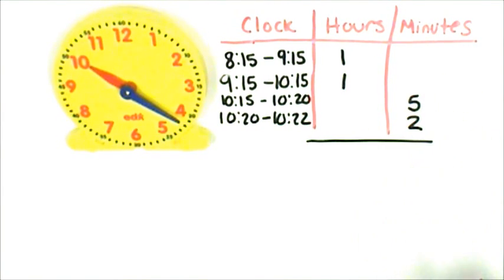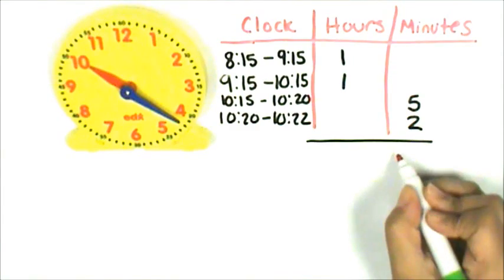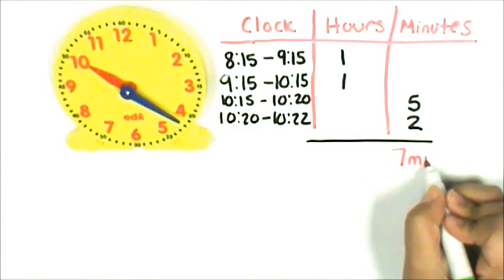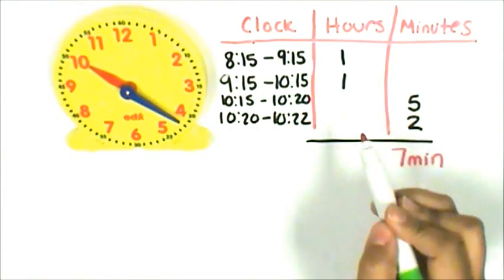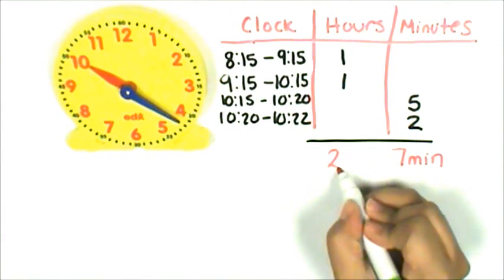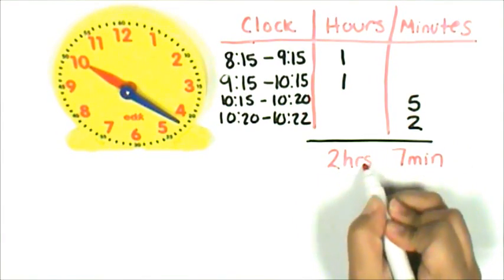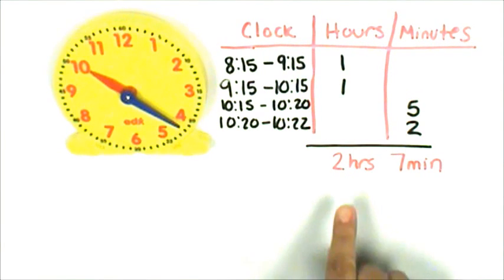I look at my minutes. Five minutes and two minutes is seven minutes. One hour and another hour, that's two hours. Amy's basketball practice was two hours and seven minutes long.